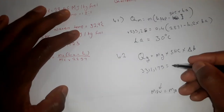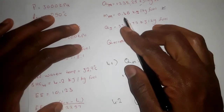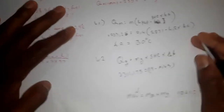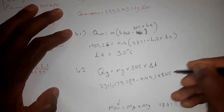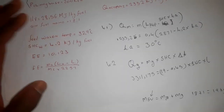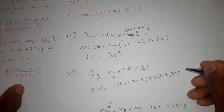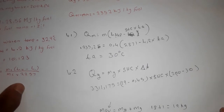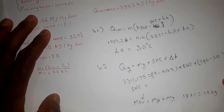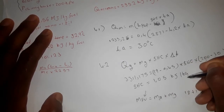The mass of dry gases is 19 minus the mass of moisture (0.4), giving 18.6 kg. The specific heat capacity is what we're solving for. The change in temperature is the chimney base temperature (200) minus the atmospheric temperature (30), which equals 170. I got the specific heat capacity equals 1.05 kilojoules per kg Kelvin.